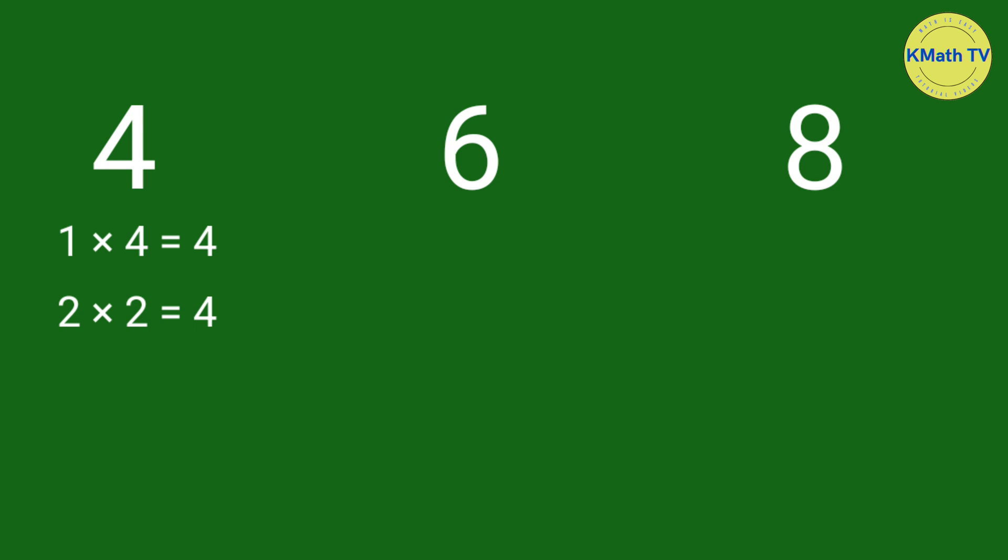How about 6? We can multiply 1 and 6. 1 times 6 equals 6. And also, 2 times 3. The product is 6. And for the number 8, we can multiply 1 and 8 and 2 and 4 to get the product 8.